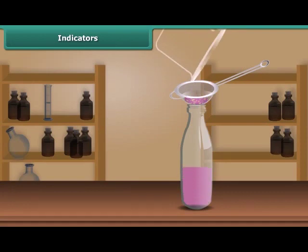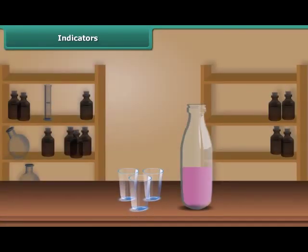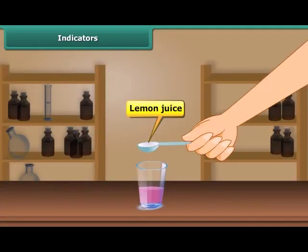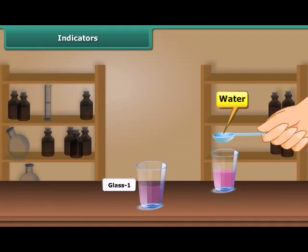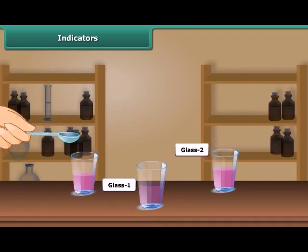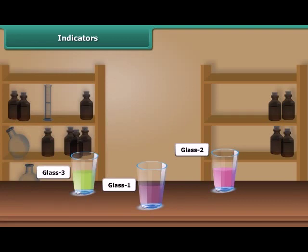Keep the mixture for some time till water becomes colored. Filter this purple-red water in a bottle with a tea strainer. This purple-red solution is your indicator. Then take small amounts of this indicator in three small glasses. Pour lemon juice in the first glass, water in the second glass, and soap solution in the third glass.